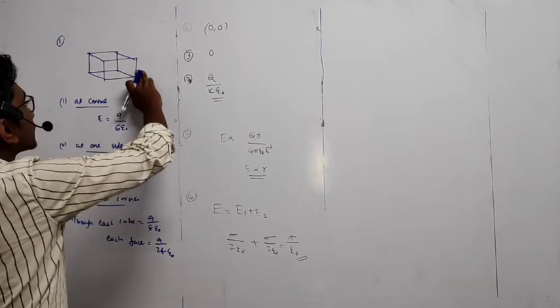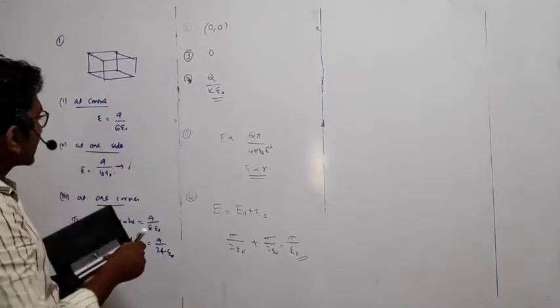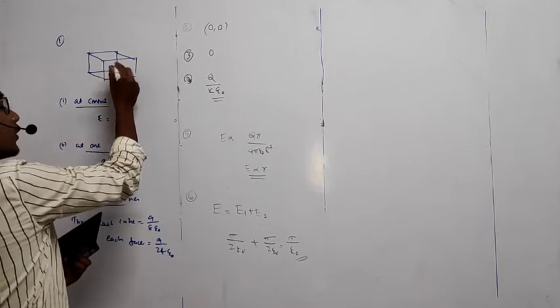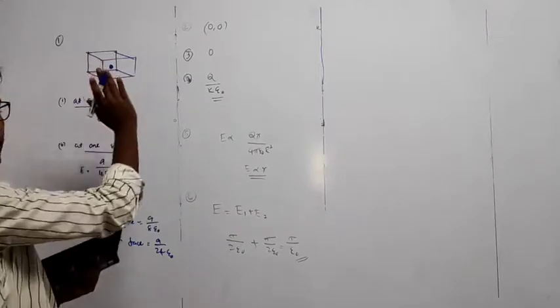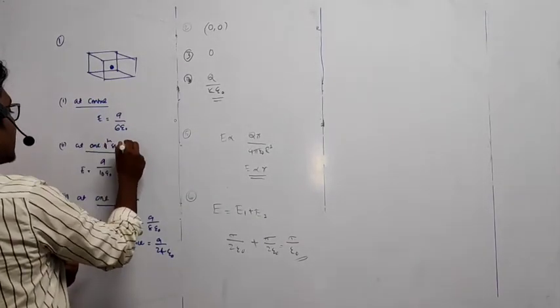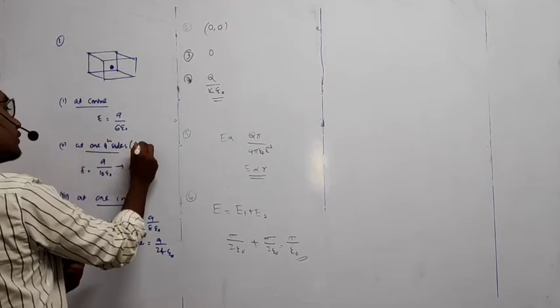Here one cube is here. So again, we are considering when there is a charge at the center, one of the faces and one of the sides. I mean side means face, here I am using faces.